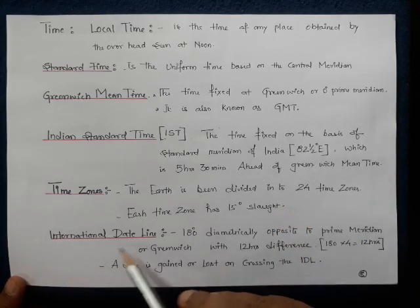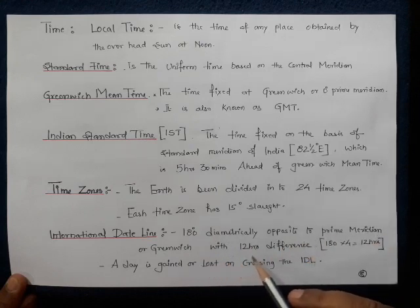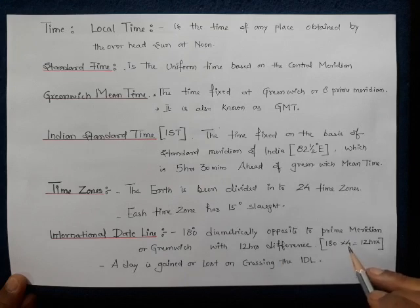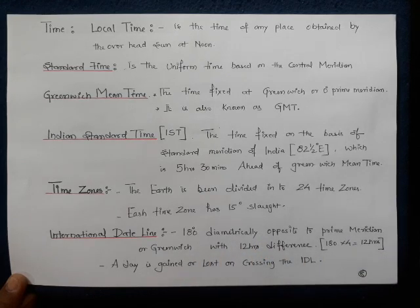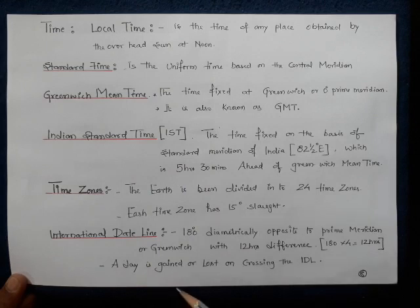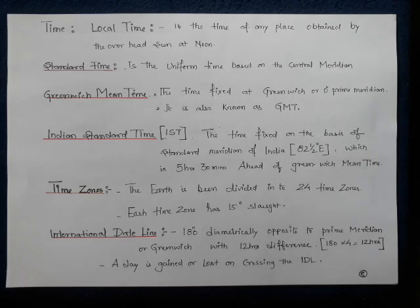The International Date Line is at 180 degrees, diametrically opposite to the prime meridian at Greenwich, with a 12-hour difference (180 × 4 = 720 minutes = 12 hours). The zero degree longitude continues as the International Date Line on the other side of the world, completing one great circle. A day is gained or lost on crossing the International Date Line. Please go through the textbook and refer to the points taught today; rest of the other topics are not included for Class 9.